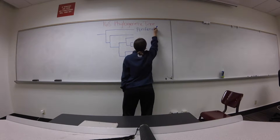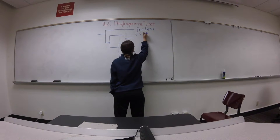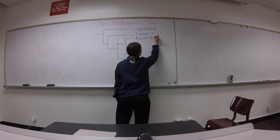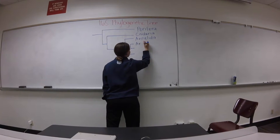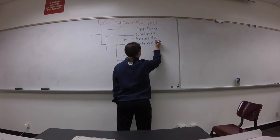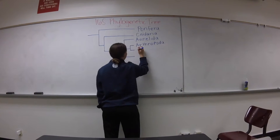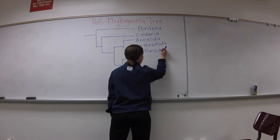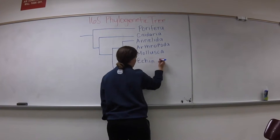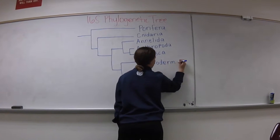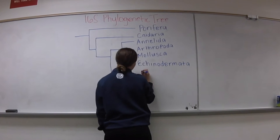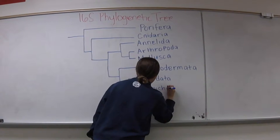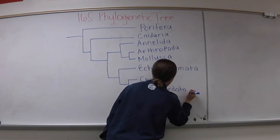In class, we constructed two trees using the 16S gene in the organisms and morphological characteristics. The 16S phylogenetic tree is more accurate because phyla are grouped together based on similarities or differences between DNA sequences, whereas the other tree groups phyla together simply based upon physical traits.